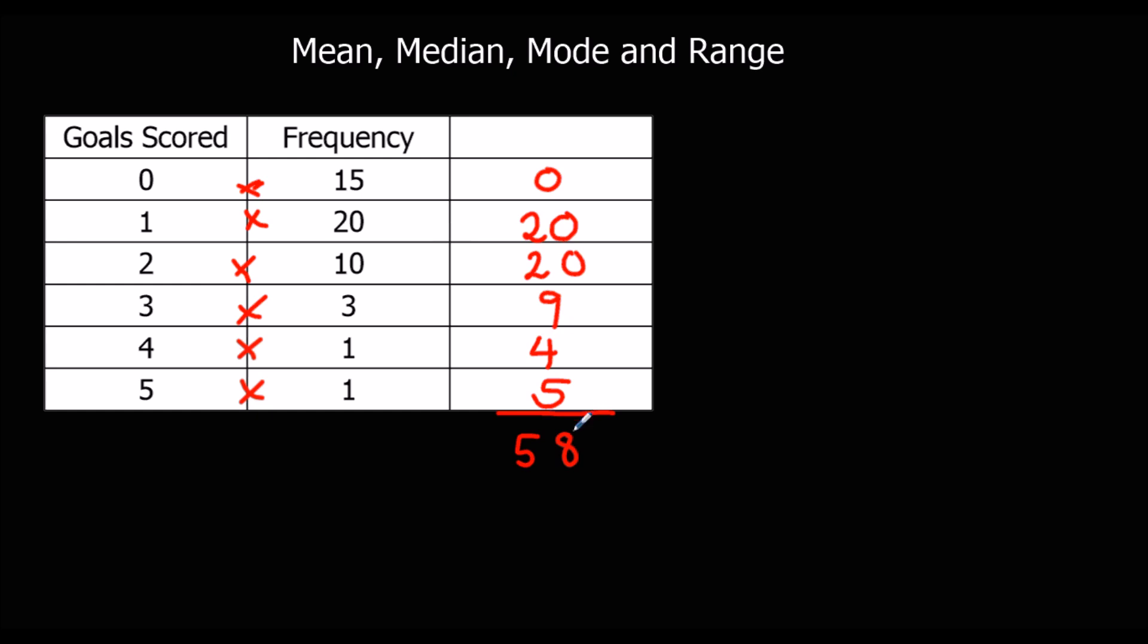So to work out how many numbers there were in total, we don't count the number of rows. We add up the frequency. So we've got 30, 45, 50.